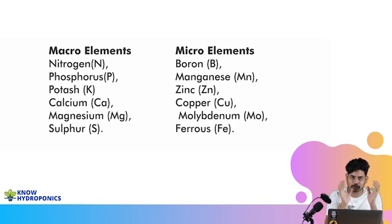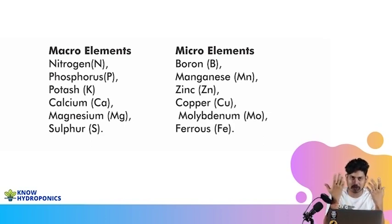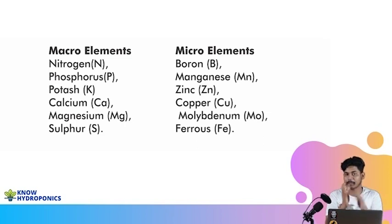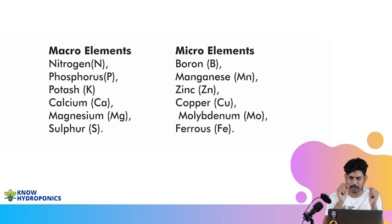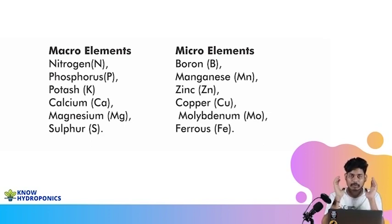We need macro elements in large quantities. In commercial farming, nitrogen, phosphorus, and potassium go in like 5 kg, 4 kg, 2 kg. Apart from that, there are micro elements — plants need them in very minute quantities, sometimes in grams, sometimes in milligrams. For example, boron goes into milligrams, molybdenum goes into milligrams.